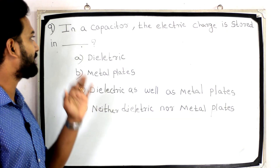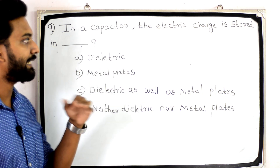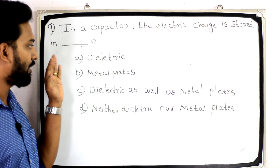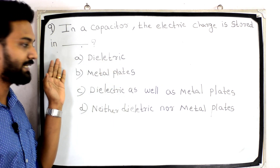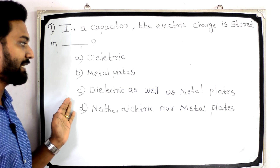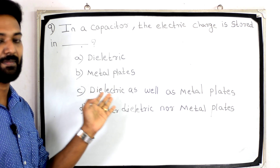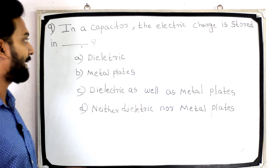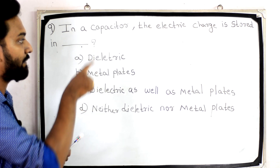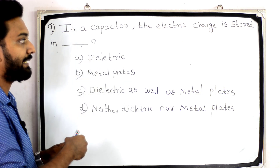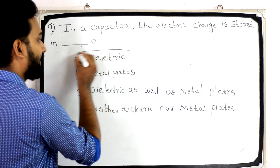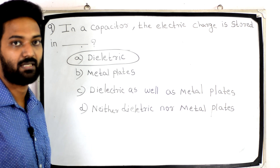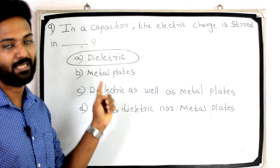The last question: In capacitors, the electric charge is stored in — option: dielectric, metal plates, dielectric as well as metal plates, or neither dielectric nor metal plates. The answer is dielectric, option A.